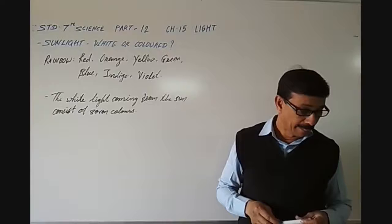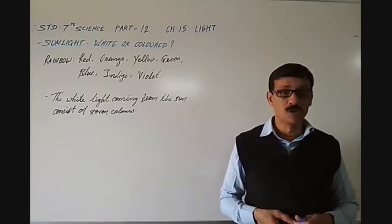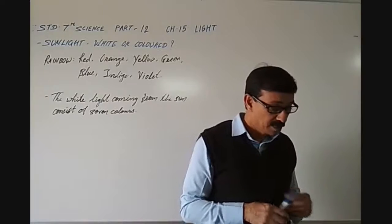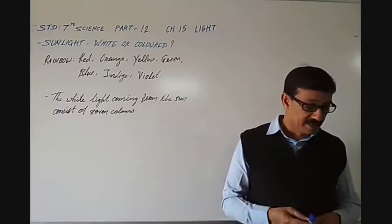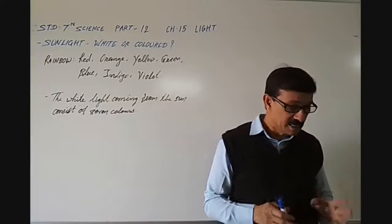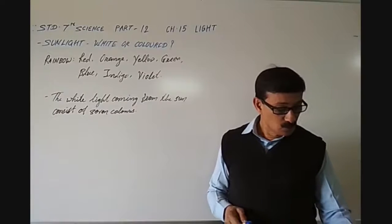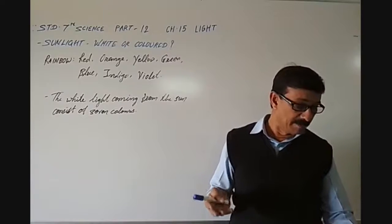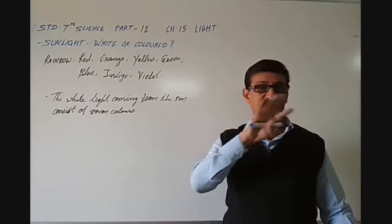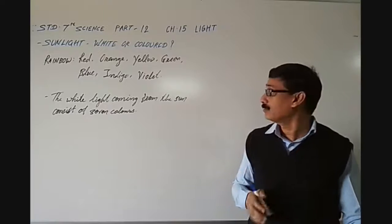How many colors are present in a rainbow? Do you know? When observed carefully, there are seven colors in a rainbow, though it may not be easy to distinguish all of them. Looking into the rainbow, we cannot easily distinguish all seven colors.